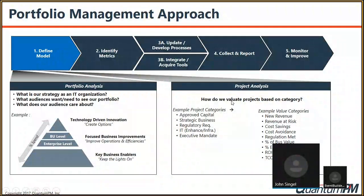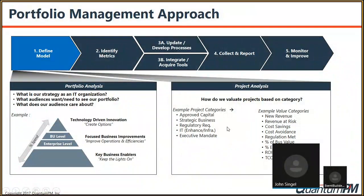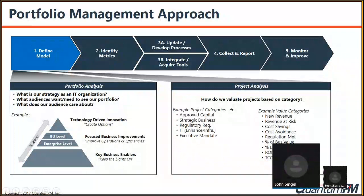Project categories include strategic projects, capital projects, regulatory requirements, IT enhancements, and executive mandates — though executive mandates should always be aligned with strategy. Regulatory requirements are things you really don't have a choice about. As for value levers, examples include cost savings, revenue at risk, cost avoidance, regulatory risk, TCO, and ROI. I'm more of a business-type person — what's the value proposition? How is it aligned with strategy? How are we enabling the business strategy? Those are the kinds of value levers we should be using to evaluate things within the portfolio.